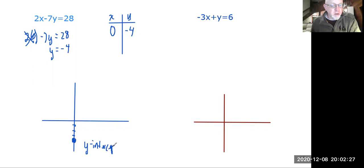Now we need another point because we're graphing a line. We need one more point, so we're going to make y equal to zero. When we make y equal to zero, we plug a zero in for y and we get two x minus seven times zero equals 28. So we wind up with two x equals 28 and x equals 14.